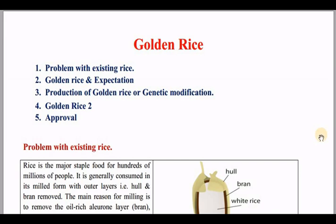Dear students, in today's video tutorial we are going to talk about an important topic — golden rice. We will first see the problem with existing rice, which is white rice. Next, we will talk about golden rice and its benefits. Then, we will talk about the production of golden rice — how it is produced and which genes are introduced. Finally, we will discuss which countries have approved golden rice.